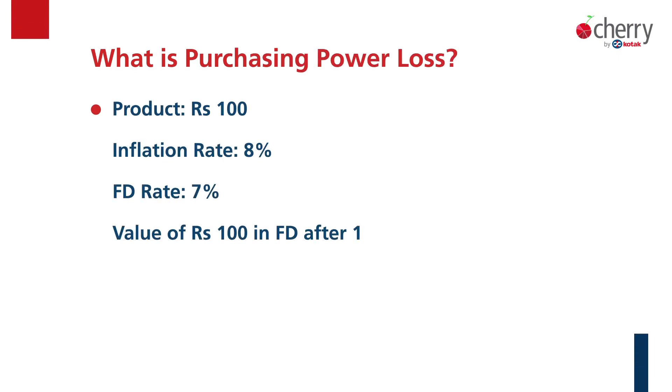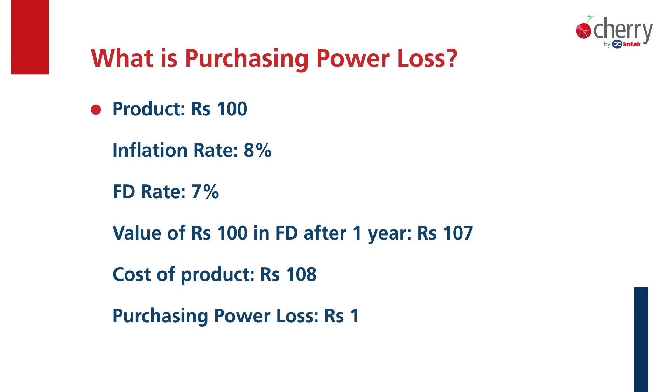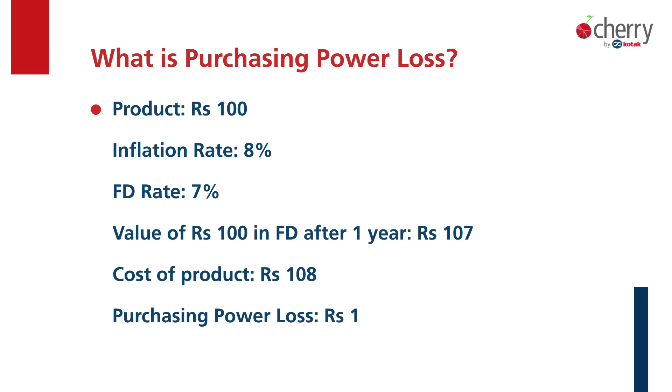Fixed deposit ka example lete hain jo 7% return deta hai. Ek saal ke baad aapka investment value ho jayega 100 rupay ka 107 rupay. But jo product aapko milta tha 100 rupay mein, uska return 107 rupay — to aapka purchasing power loss hua hai, which means your rate of return is not able to cover the rate of inflation. On a risk adjusted basis, your rate of return should cover inflation — aap high risk product me invest karo ye zaroori nahi.